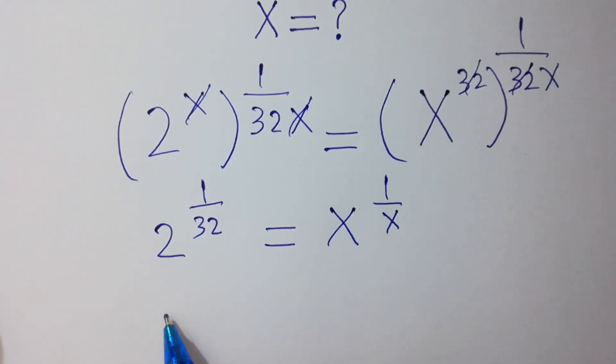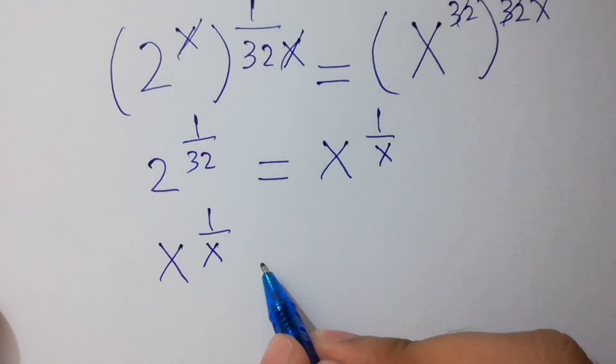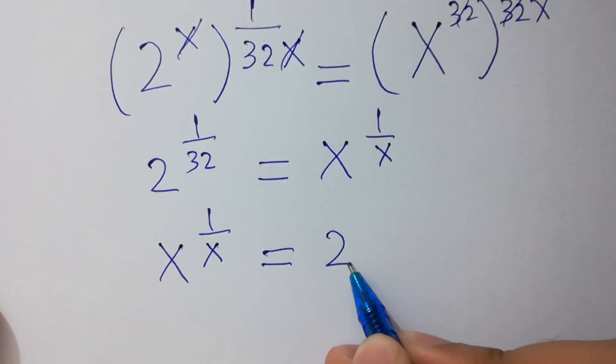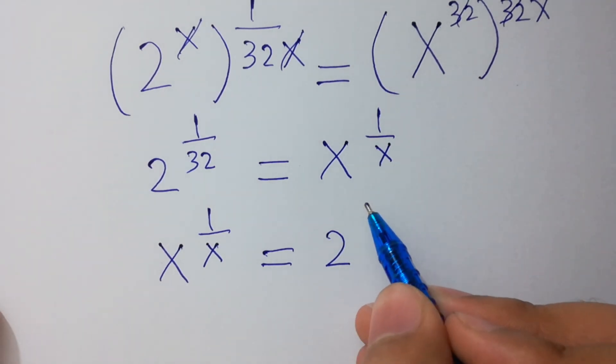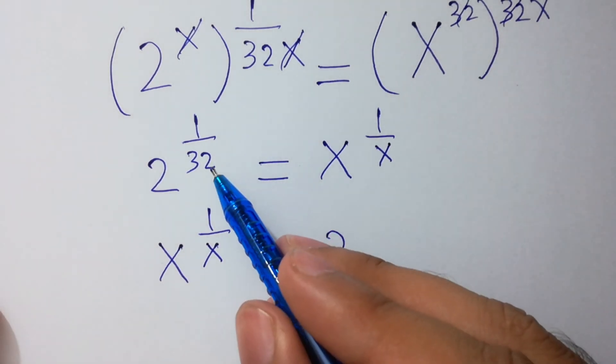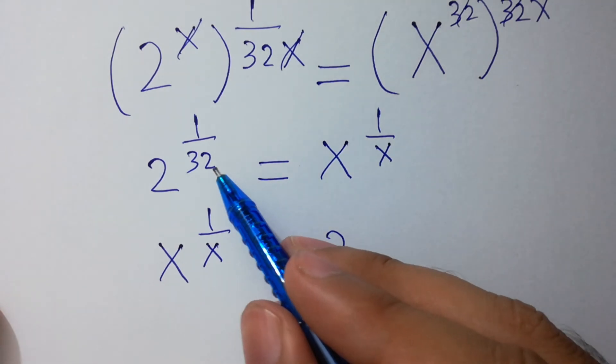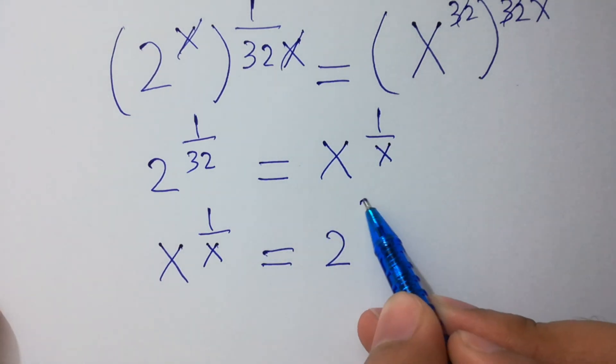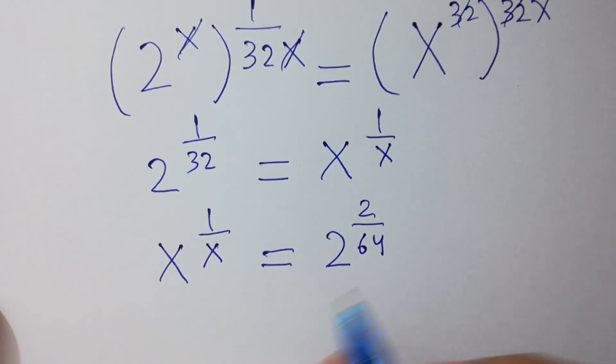Let's take x to the power 1 over x on the left hand side and 2 to the power 1 over 32 on the right hand side. 1 over 32 can be written as 2 over 64.